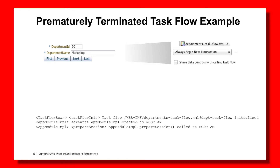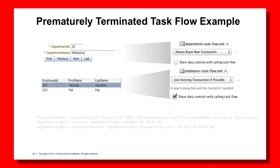Let's extend this example by including a region on the screen that calls another bounded task flow showing the related employees information. This is a little contrived — normally we'd set up a master-detail screen — but there's no issue building two separate bounded task flows: one to show departments and one to show the employees for that department, passing the department ID through to the second bounded task flow so it knows what employee data to display.